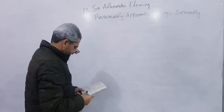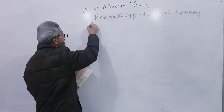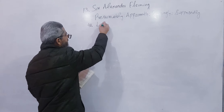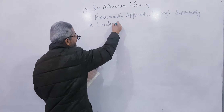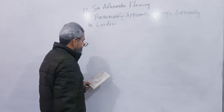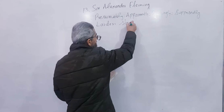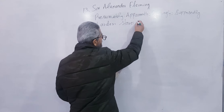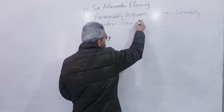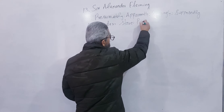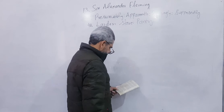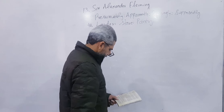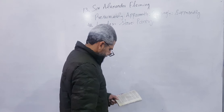Next, I will write number forty-two: Larder, L-A-R-D-E-R. Larder is a storehouse — a pantry, P-A-N-T-R-Y. It is also called a store or pantry.